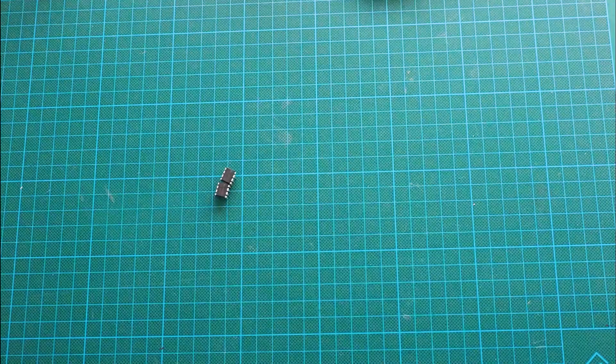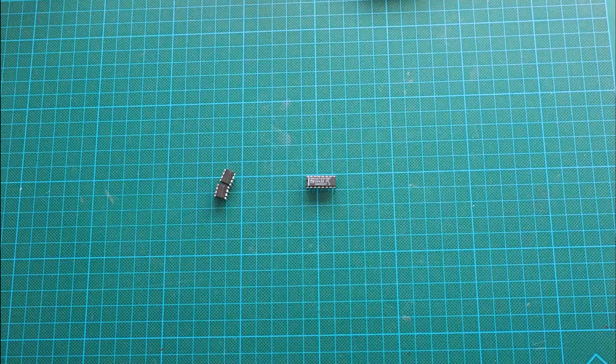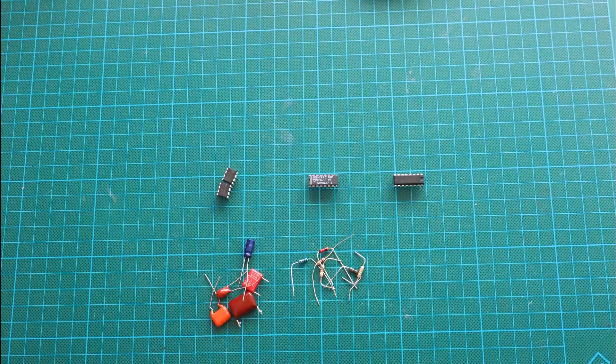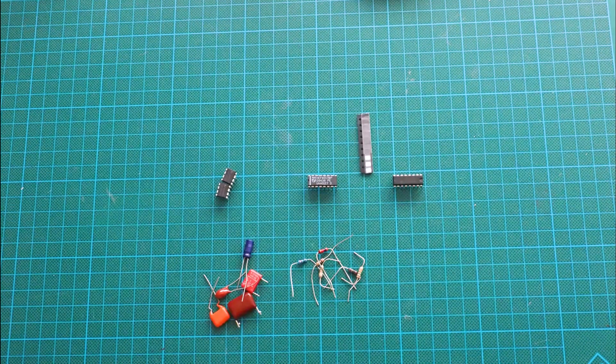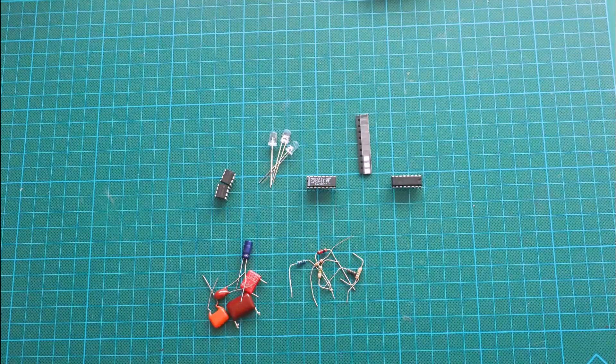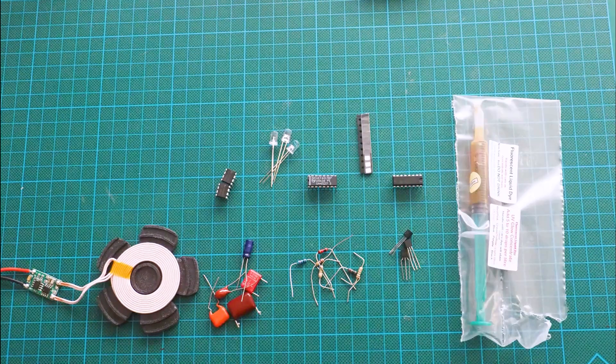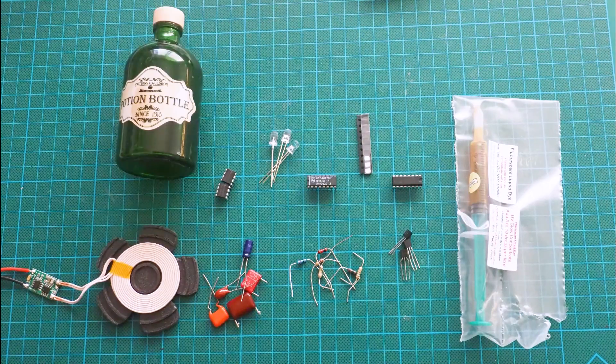The parts for this project are 555 timers, 4017 decade counter, ULN2003 Darlington drivers, some capacitors, some resistors, some tiny blue LEDs, UV LEDs, some signal diodes, a QI charging coil, some UV dye, and a selection of potion bottles.